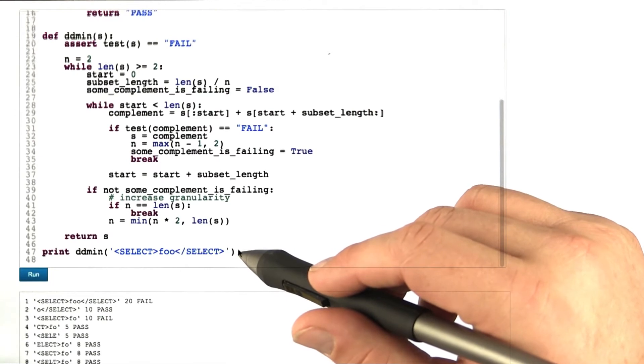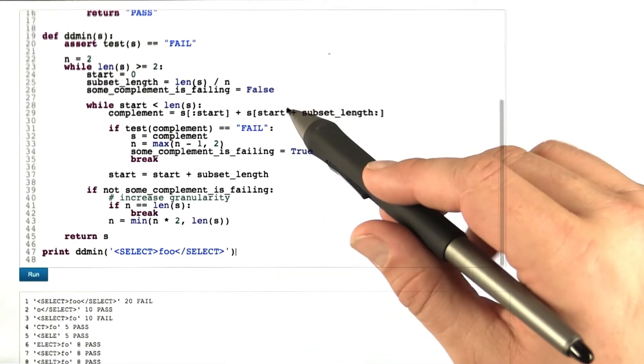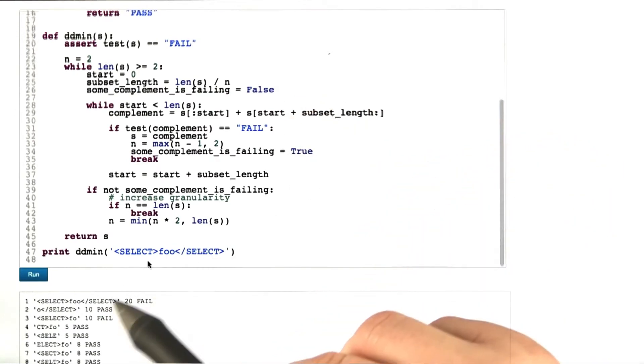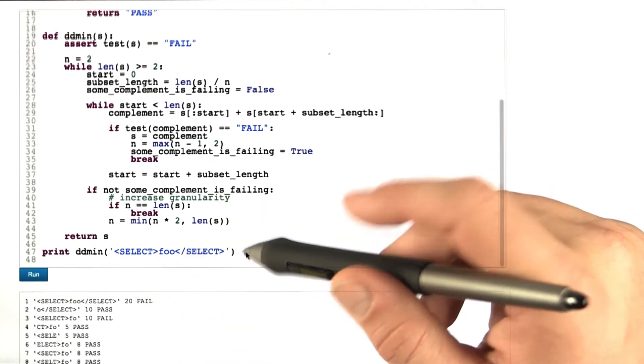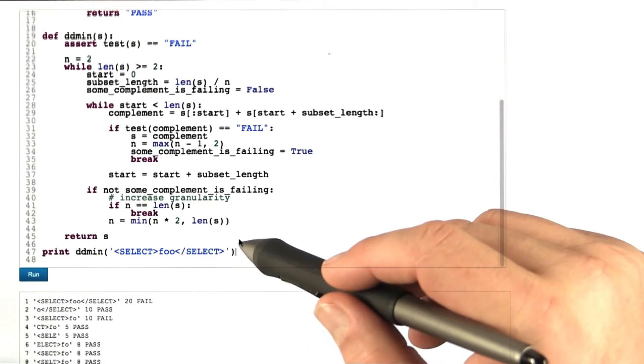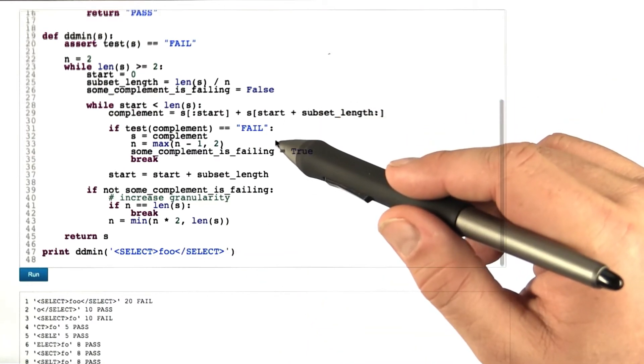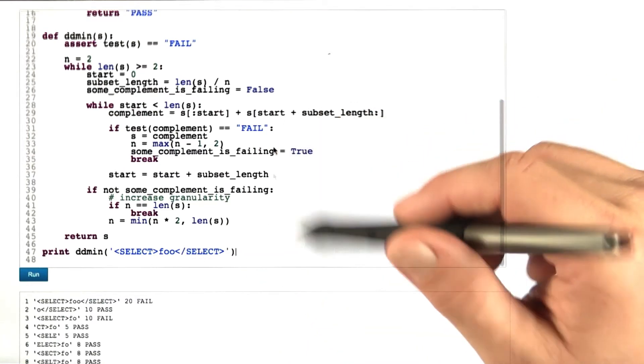How can we make delta debugging aware of the input structure? We have already seen that delta debugging works on lists as well as on character strings. So what we could do is, we could split the string into individual substrings according to the input structure, and have delta debugging work on that list of elements instead.